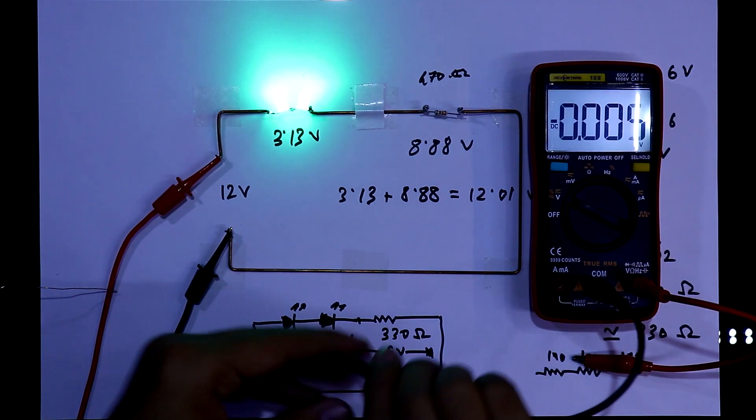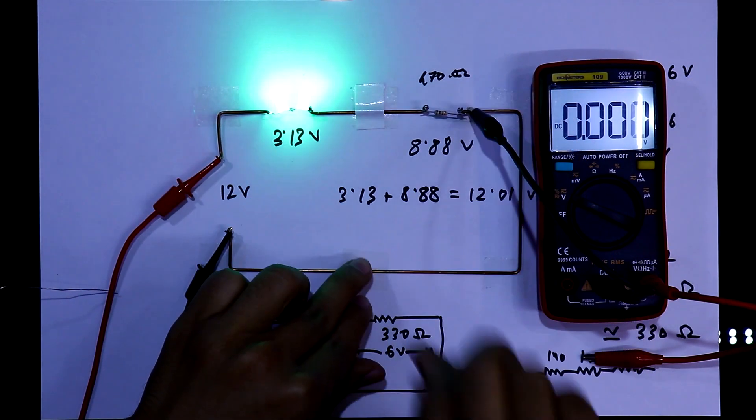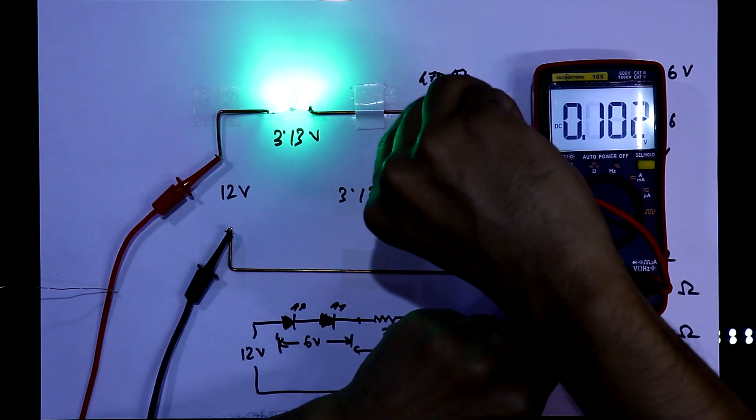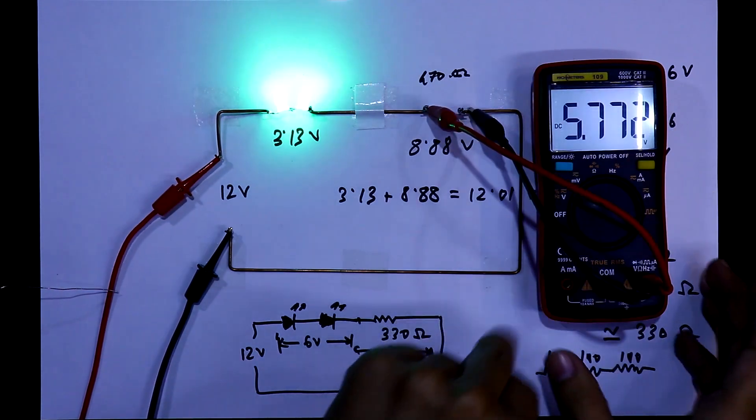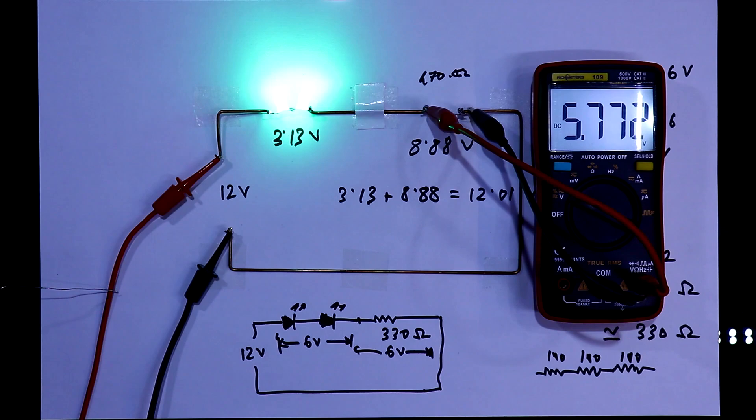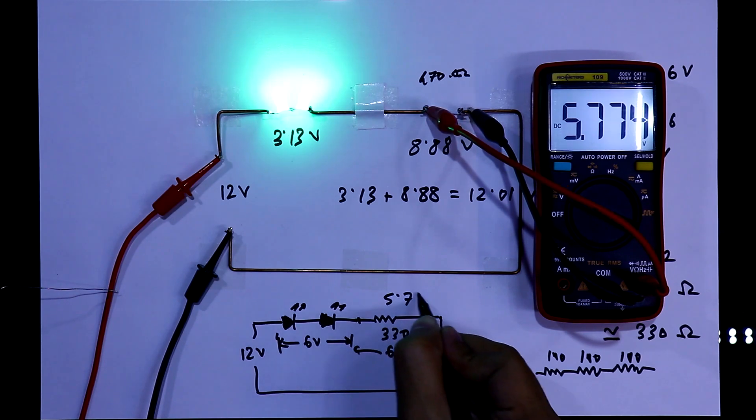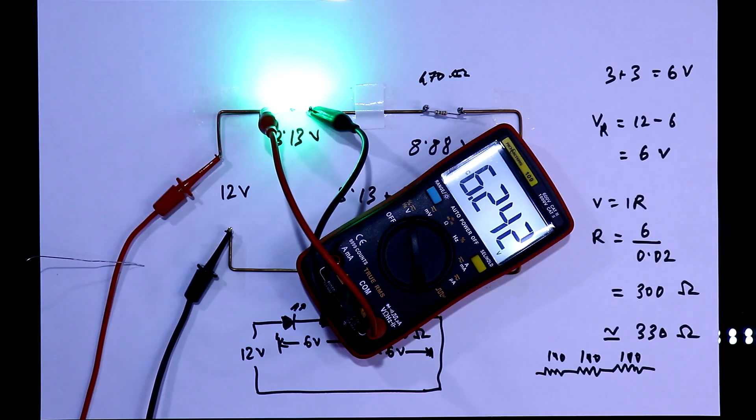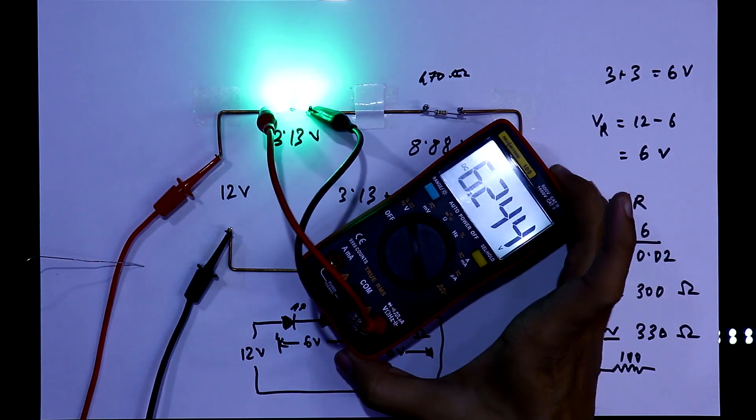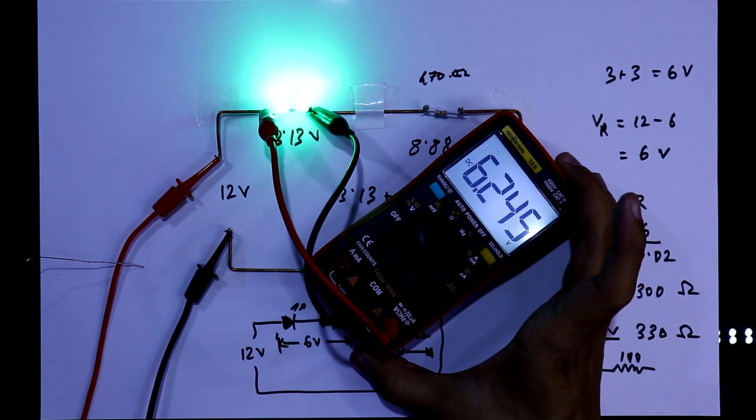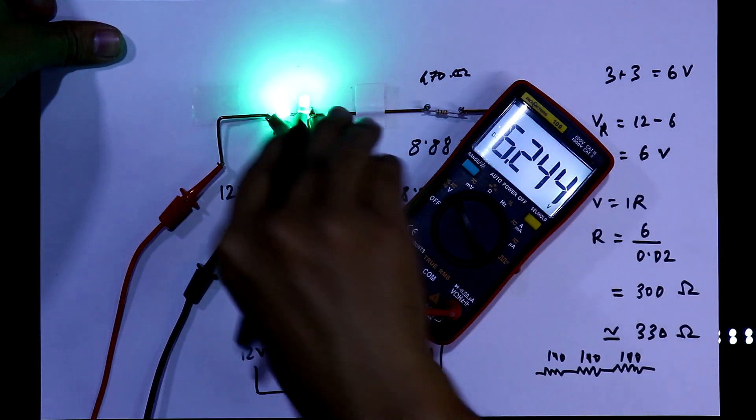Now measure the voltage drop at the resistor. It is 5.77V. And voltage drop at both the LEDs is 6.24V.